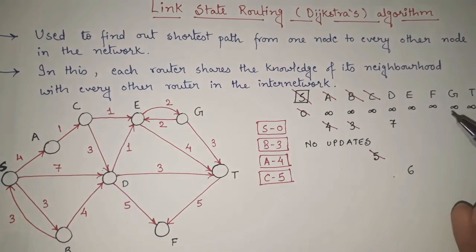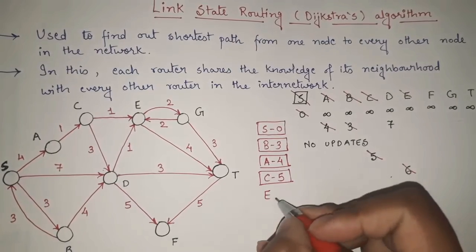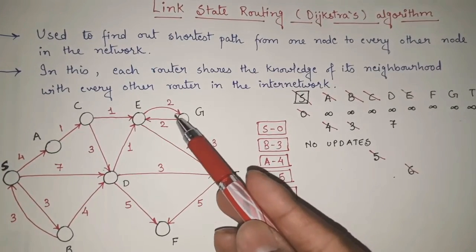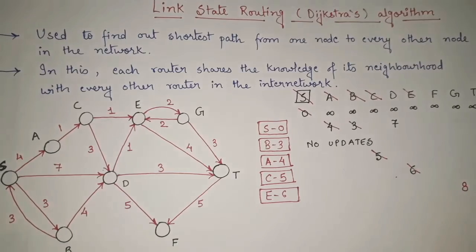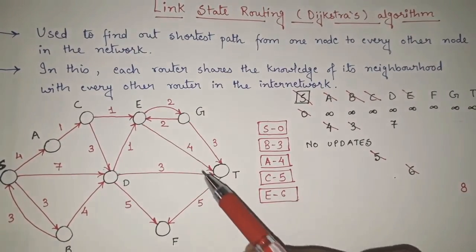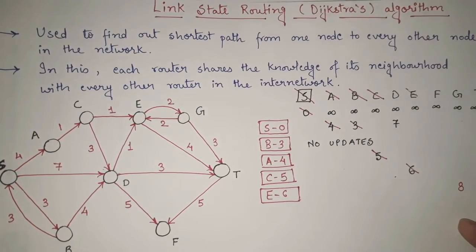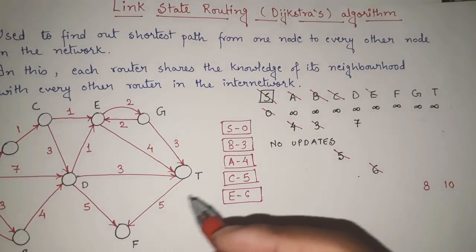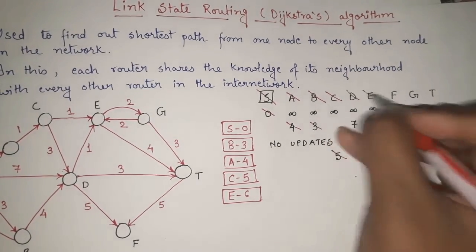Out of the remaining values — 7, 6, and infinite — the minimum is 6. So I finalize E as 6 and mark E as done. From E, I can directly go to G with cost 2, so 6 plus 2 = 8; I update G to 8. From E, I can also go directly to T with cost 4, so 6 plus 4 = 10; I update T to 10.